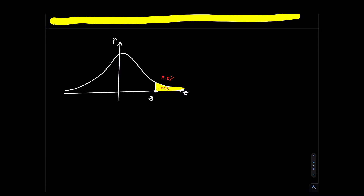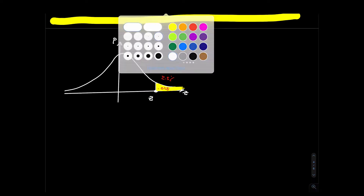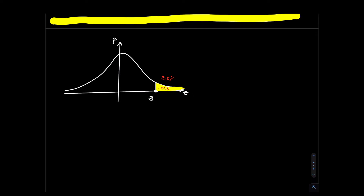The top two and a half percent means you're dealing with the bottom 97.5 percent — it's almost like finding the 97.5th percentile. Remember, Excel's natural probability for the NORM.S.INV command is always the area to the left. So if you mistakenly write =NORM.S.INV(0.025), that'll give you the wrong answer, because Excel will think 0.025 is the area to the left.